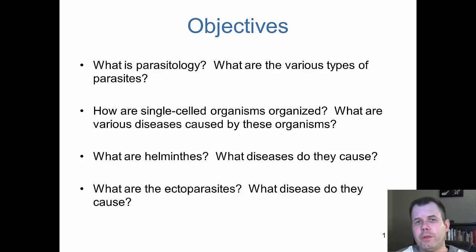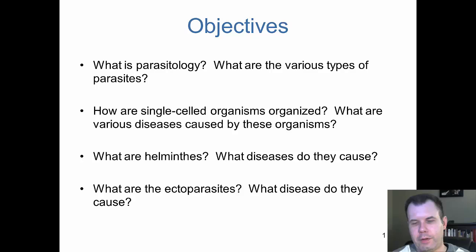Hi class, Dr. Jim here. Chapter 23 is looking at parasites, and we can divide these up into three main groups. First, we'll talk about the really small guys — the single-cell organisms known as protozoa — which are typically found in the intestine. About 10% of the world's population actually has some kind of parasite within them, or probably even more than that.